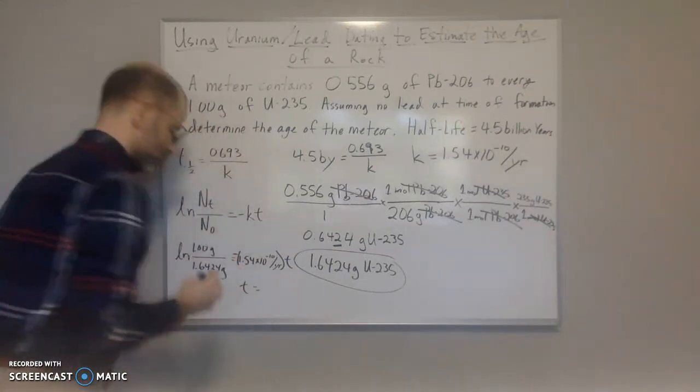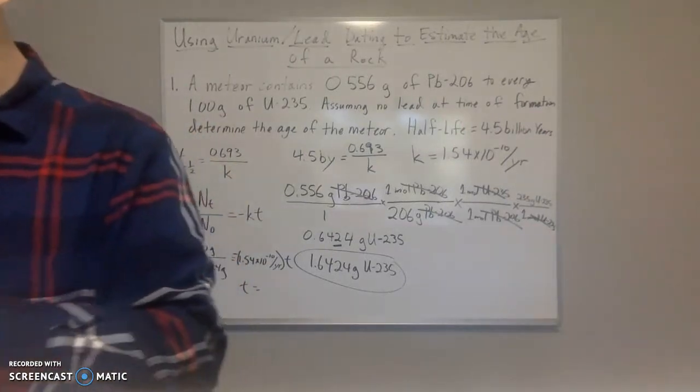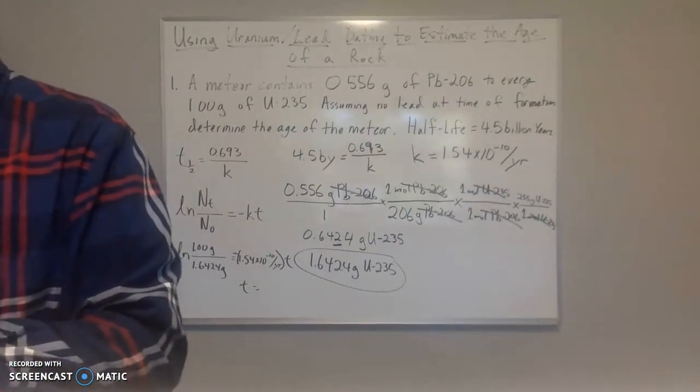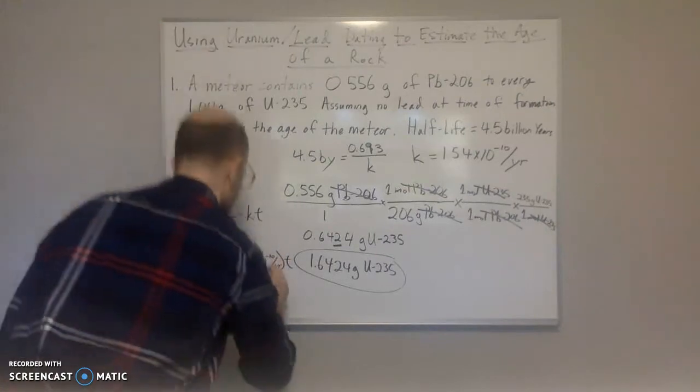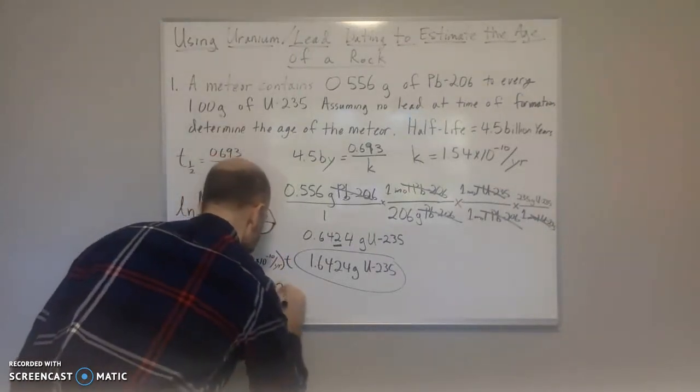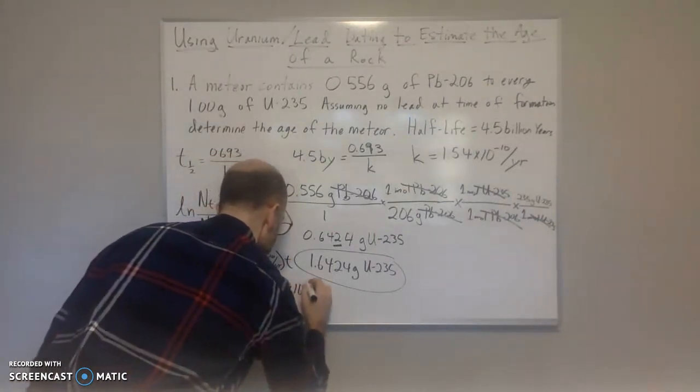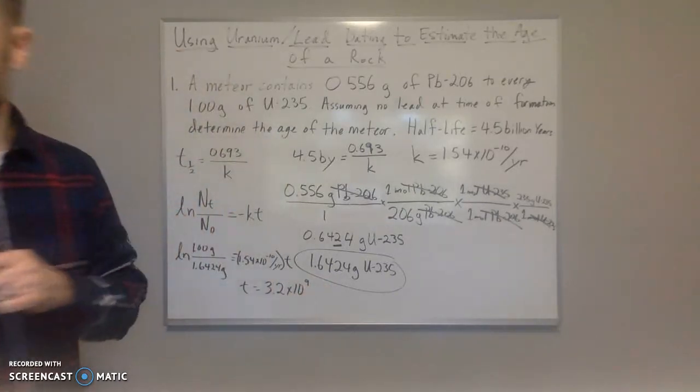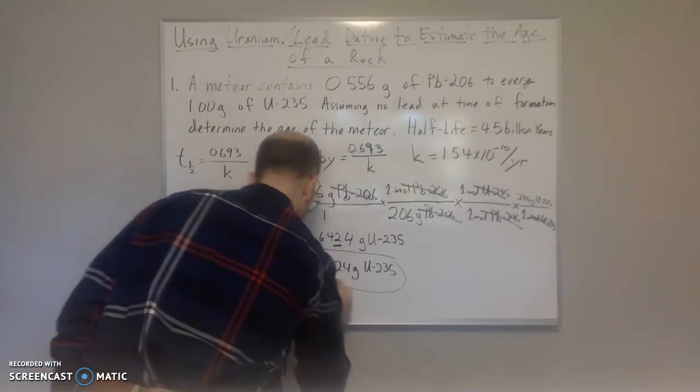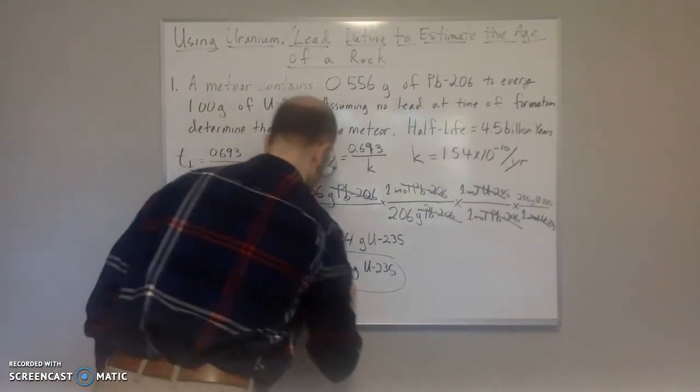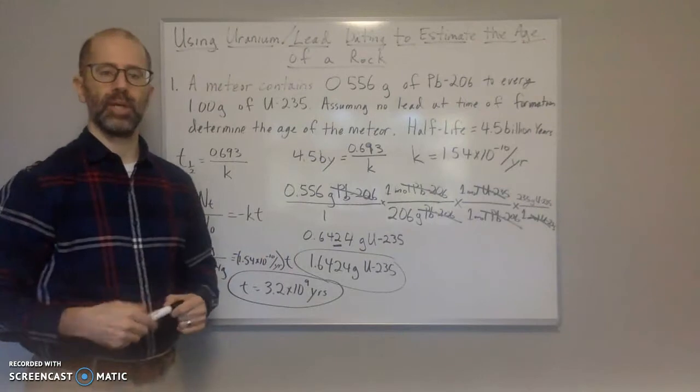So all we need to do is solve for t. And when we do that, we get t is equal to 3.2 times 10 to the 9 years. So that is the age of the meteor.